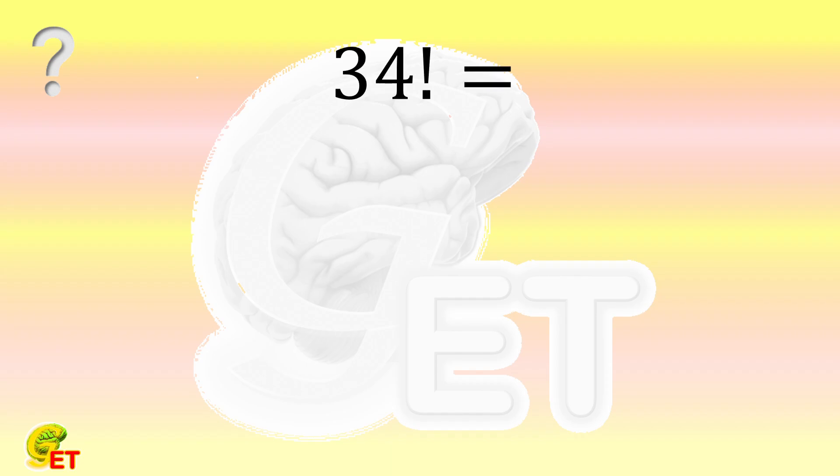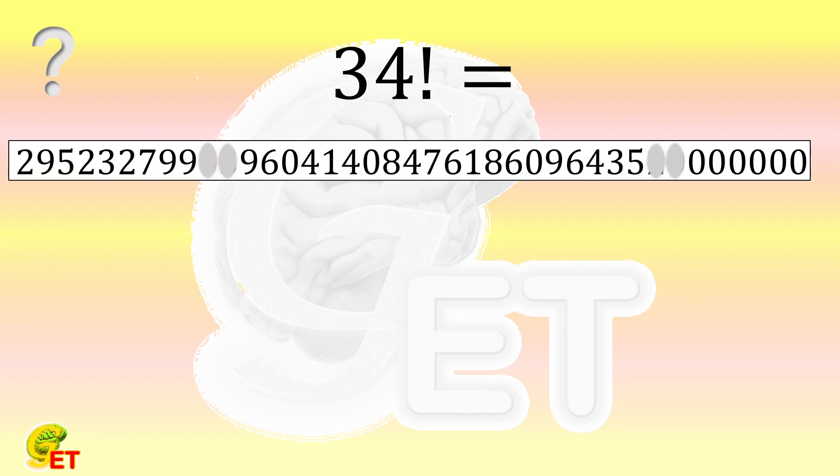The factorial of 34 is a very large number. A student printed out its result from a computer calculation on a slip of paper, but unfortunately four digits are illegible. We call them A, B, C, and D. Can you restore what those four illegible digits are?